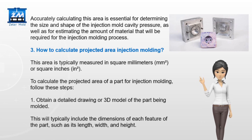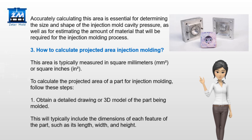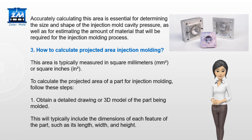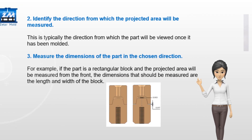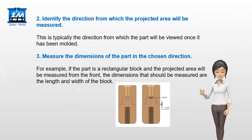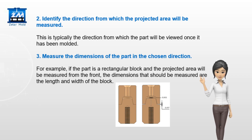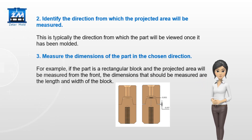Obtain a detailed drawing or 3D model of the part being molded. This will typically include the dimensions of each feature of the part, such as its length, width, and height. Identify the direction from which the projected area will be measured — this is typically the direction from which the part will be viewed once it has been molded.